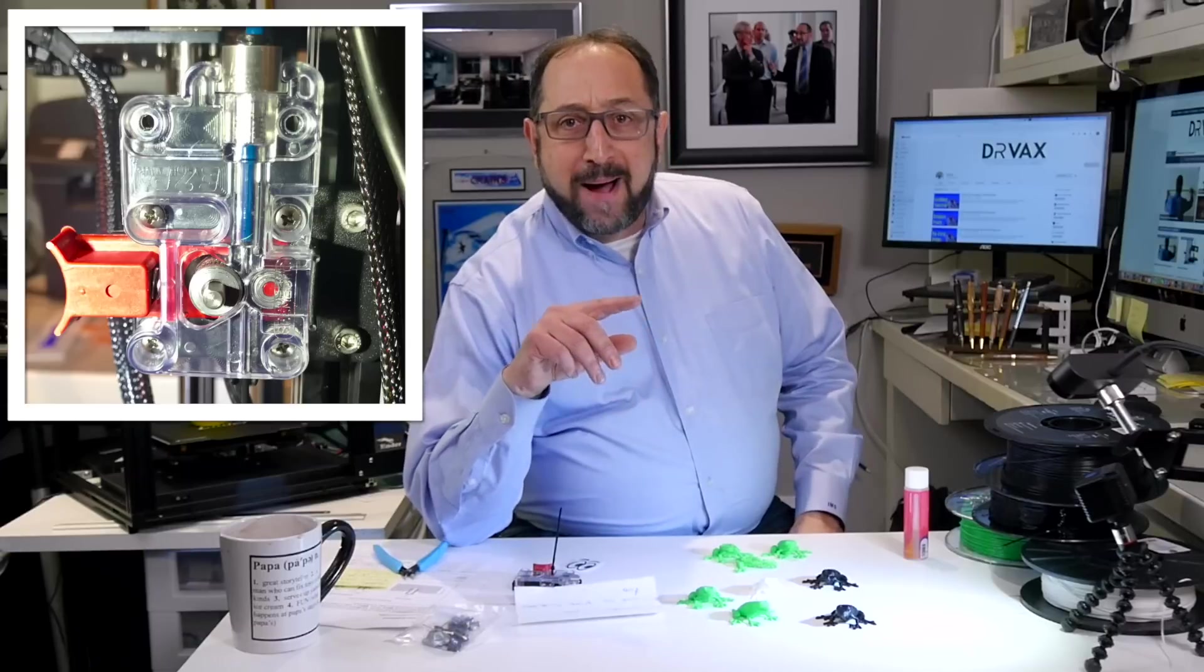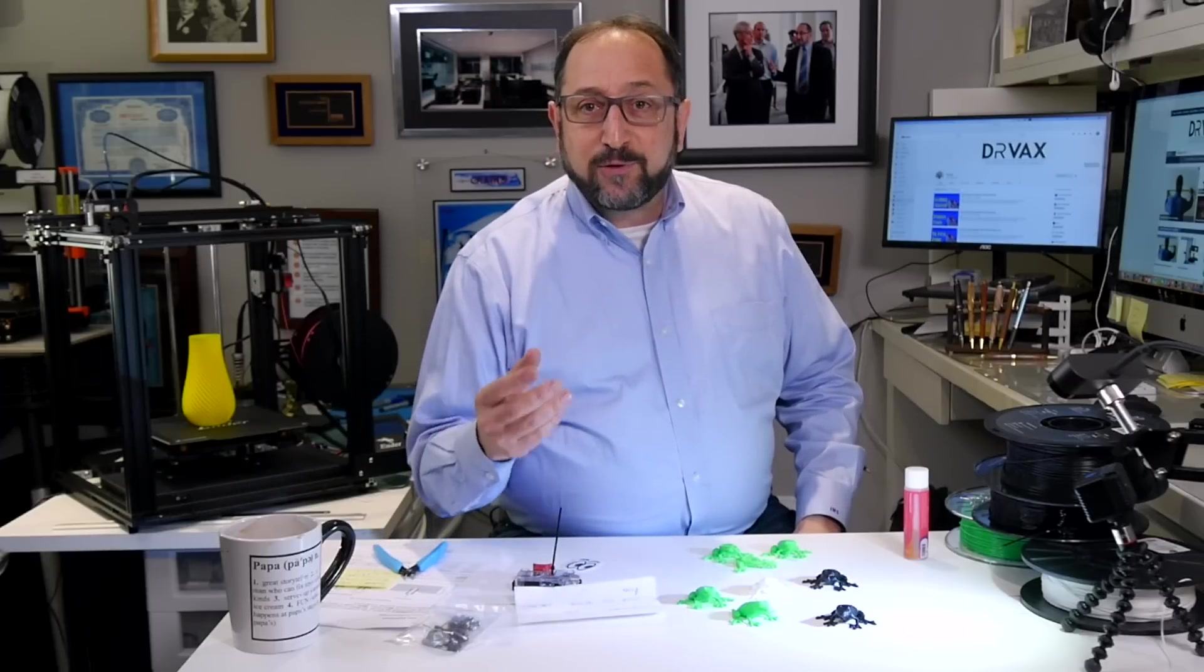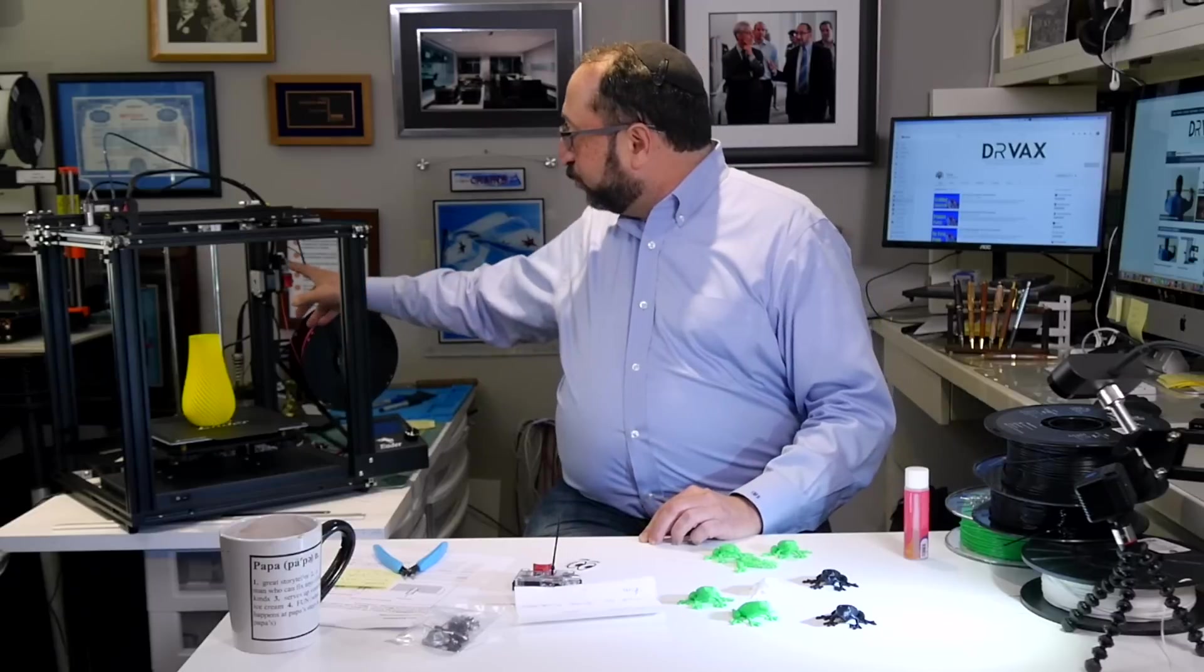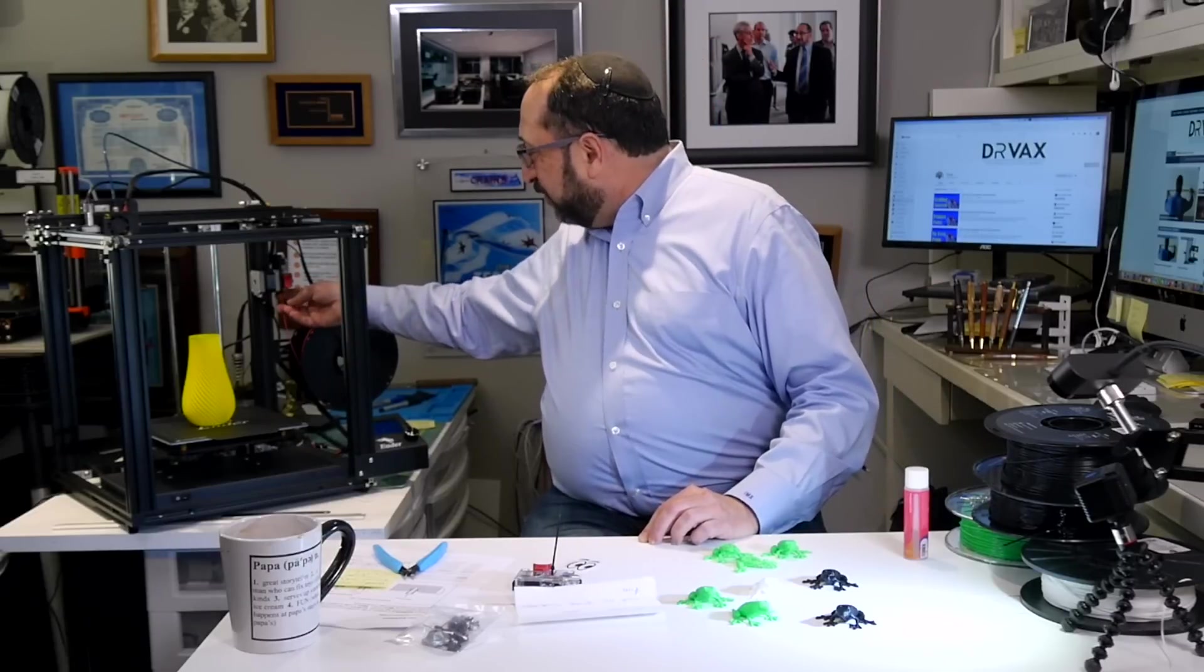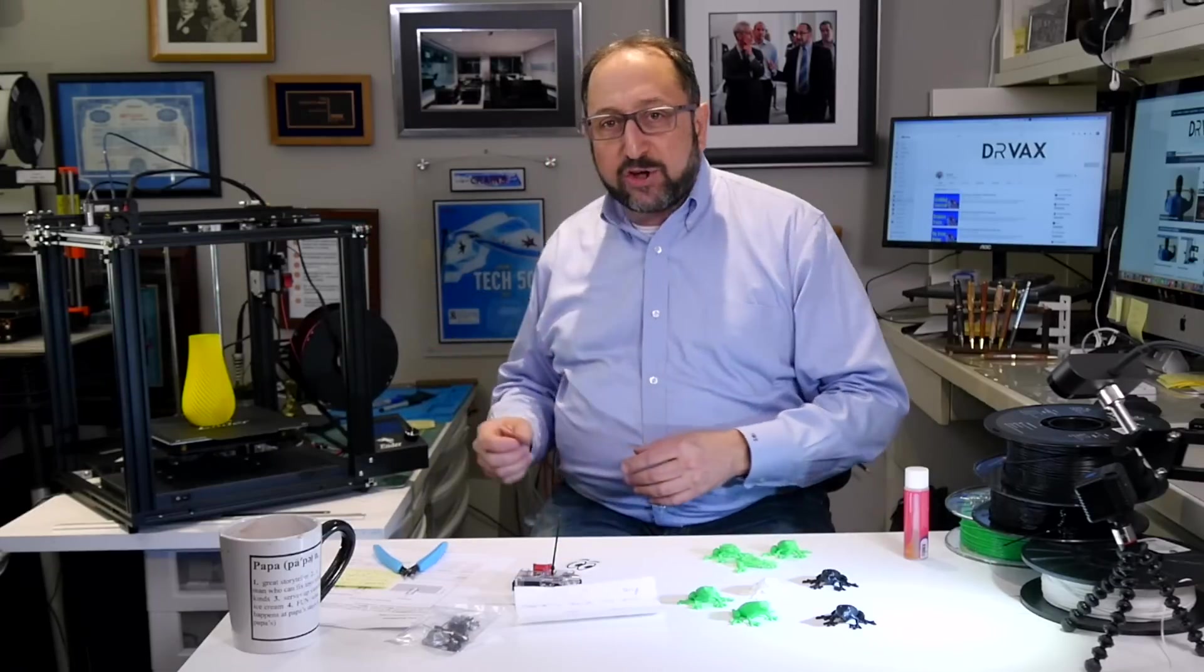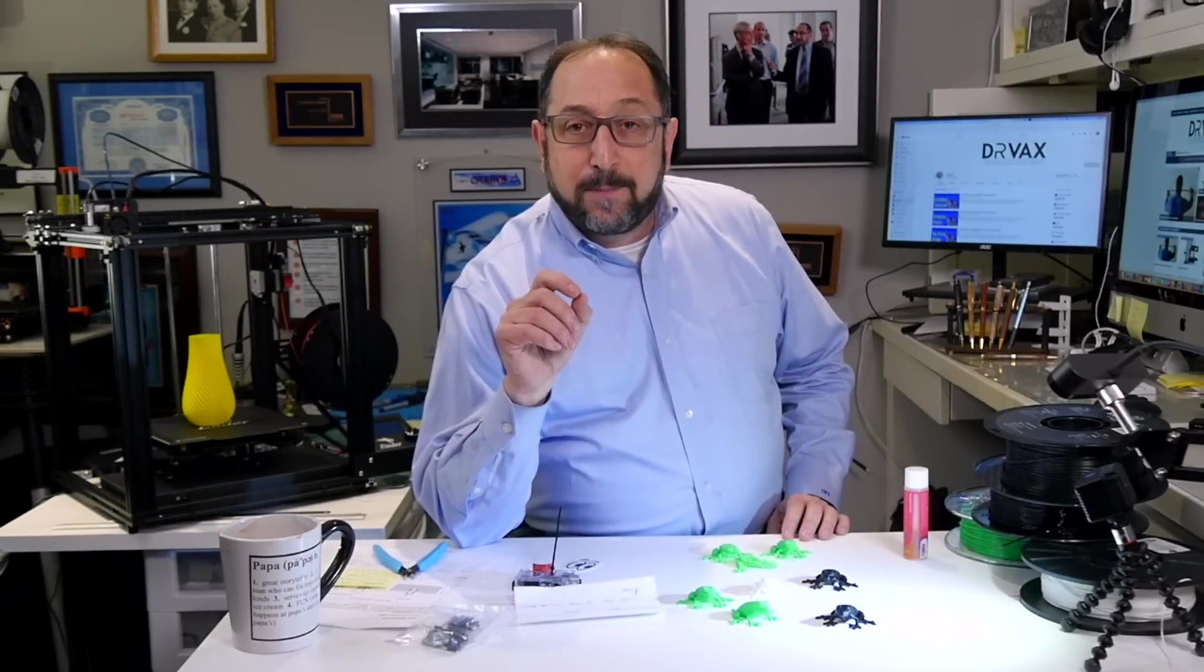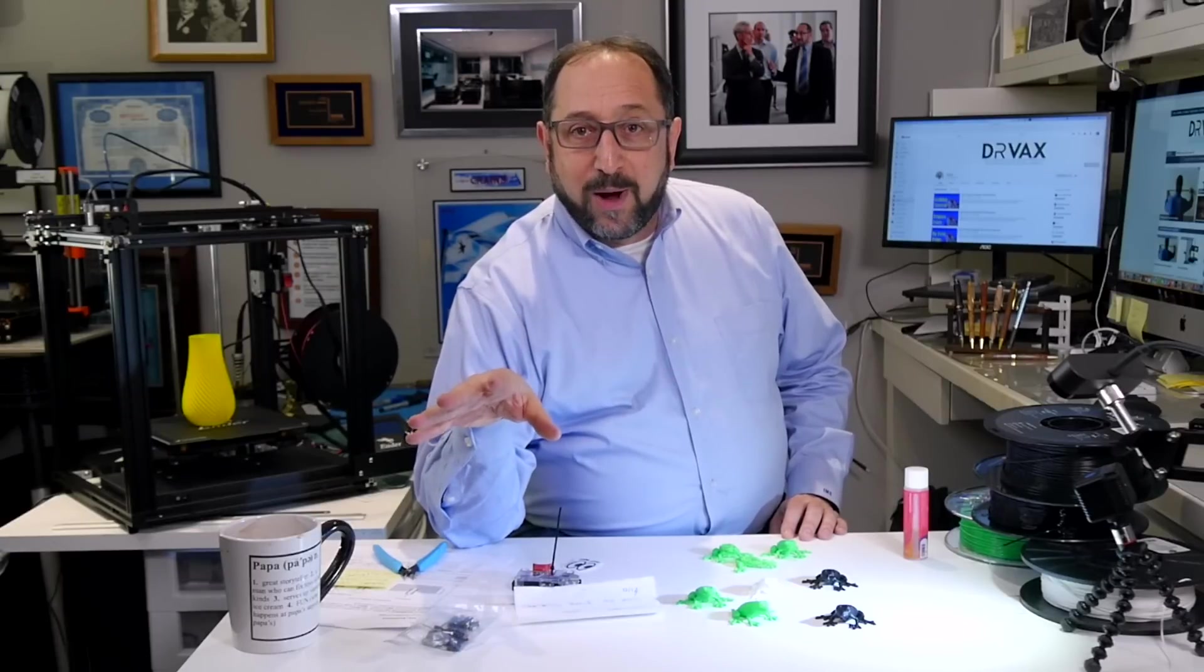One of my minor complaints about my Ender 5 historically has been that it's just difficult to load filament. The location of the filament extruder on the Ender 5 is in the back corner. It's hard to get to when I have it in a normal desk location. And very often I had difficulty getting the filament from the extruder into the Bowden tube. With the EZ extruder, that problem goes away.